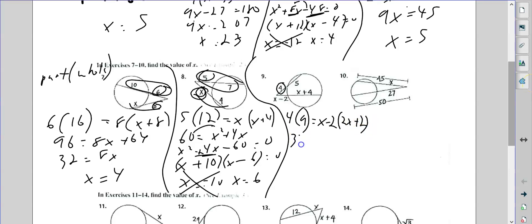So that gives me 36 equals, so x times 2x is 2x squared. 2x minus 4x is minus 2x minus 4. I need to move the 36 over. So that gives me 2x squared minus 2x minus 40.